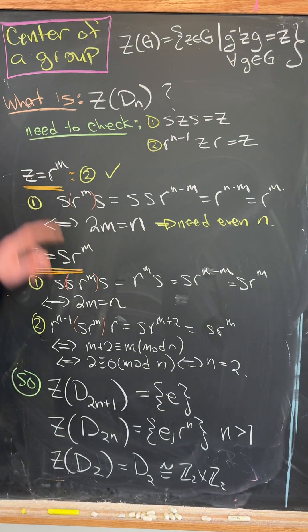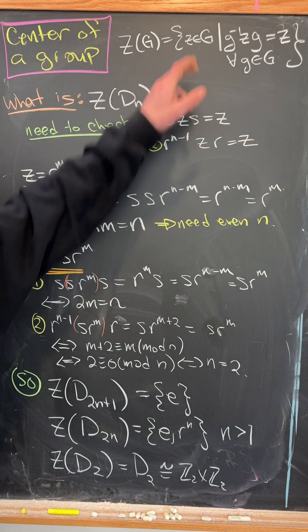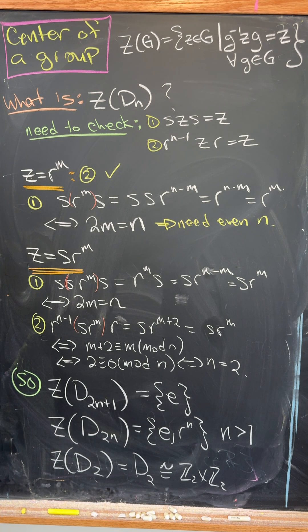Let's analyze the center of the dihedral group. So let's recall that the center of the group is just the set of all of the elements that commute with all of the other elements.